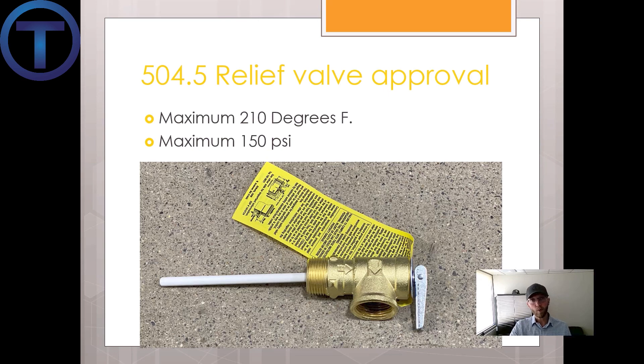Those are the two points at which the valve should open up. Most of the time it's going to open due to high pressure rather than high temperature, since we're almost at boiling at 210°F. You can get temperature pressure relief valves rated higher than 150 PSI — up to 170 or other ranges. They look and install the same. Let me tell you what plumbers used to do — and please, don't do this anymore.